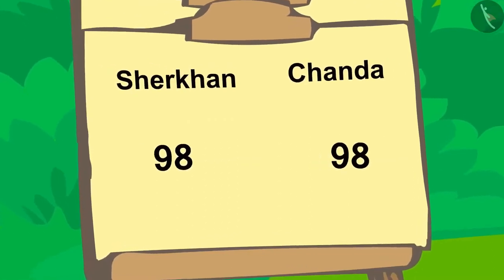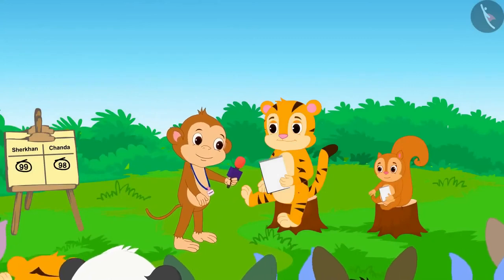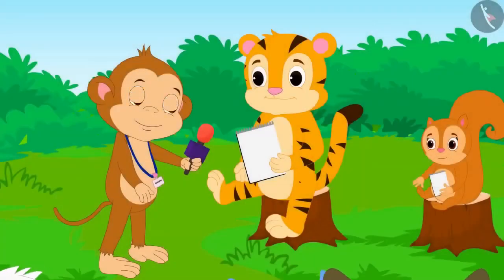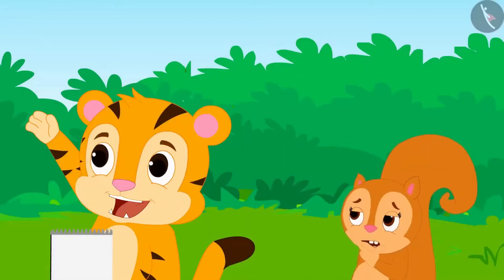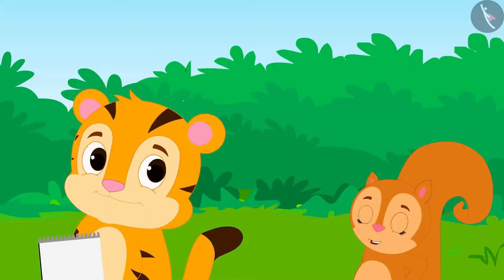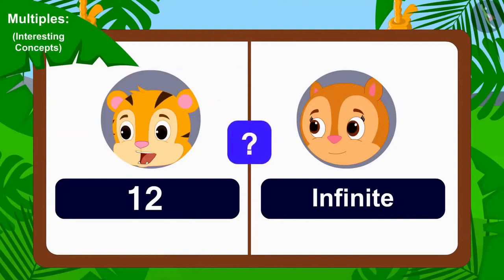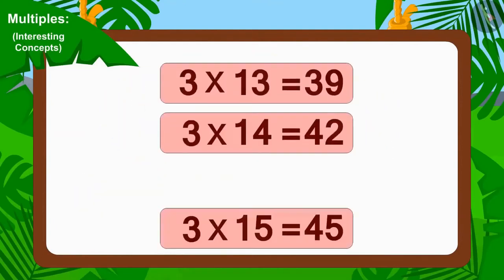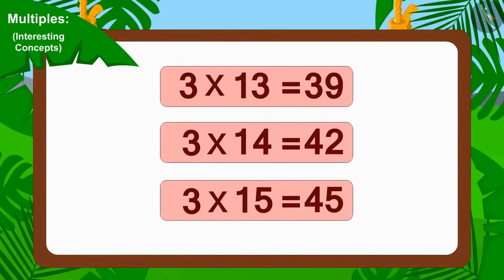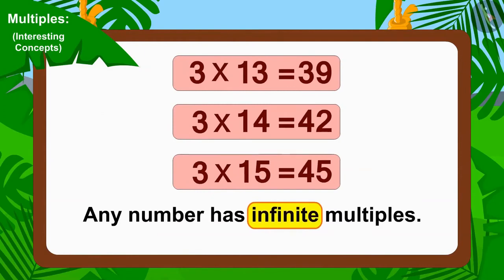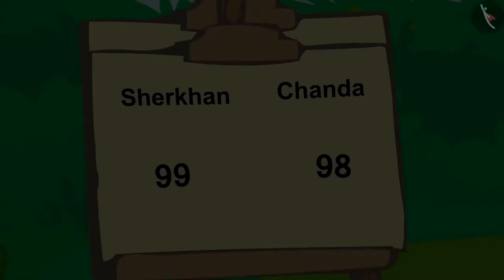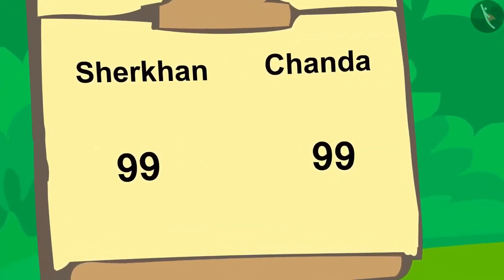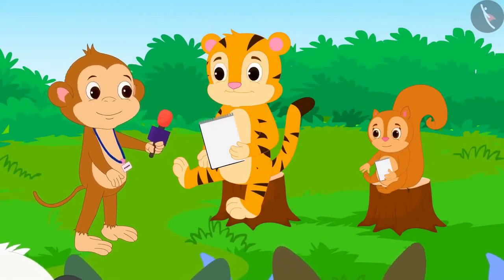Sheer Khan is now one point ahead of Chanda. Let's see what is the next question of the competition. Babban asked: How many multiples can any number have? We can multiply any number with infinite numbers. So, any number has infinite multiples. Chanda's answer is correct. Once again, the scores are equal. Now let us see what the last question of the competition is.